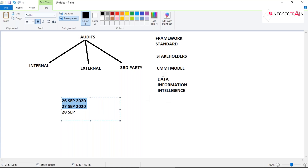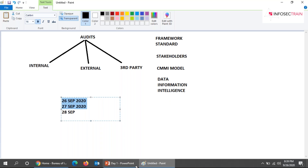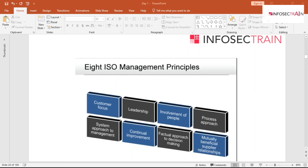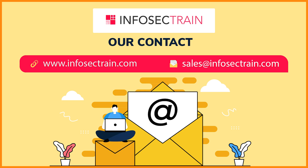Mutually beneficial supplier relationship: your organization and your suppliers are independent bodies, but a mutual relationship enhances the ability of both parties. Having a mutually beneficial relationship with vendors, third parties, and suppliers helps you achieve your business objectives. Those are the eight ISO management principles we have discussed.